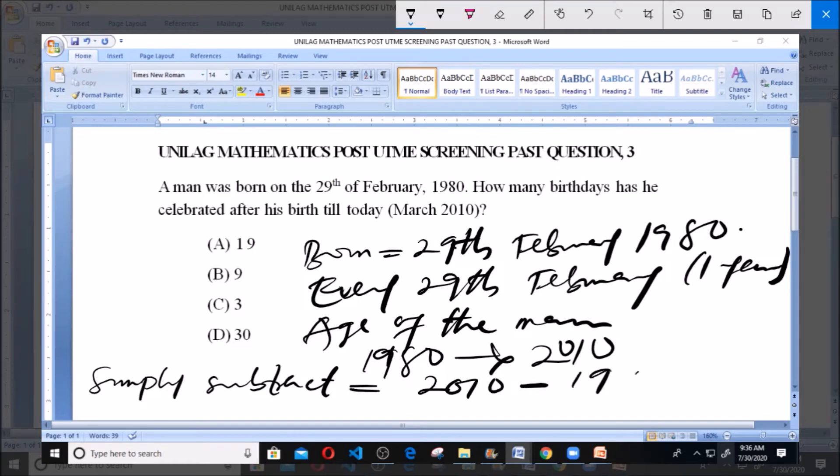That's 2010 minus 1980. Now 2010 minus 1980 gives you 30.